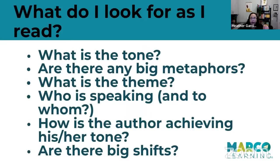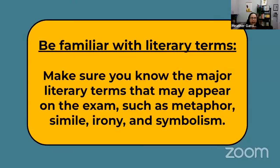Figure out who's speaking and to whom they're speaking — it feels basic, but if you're stuck in a passage, wrapping your head around this can re-center you, especially if you get into a panic mode. How is the author achieving his or her tone? Underline and circle that. And are there any big shifts — especially in poetry, especially in a sonnet? Anytime you see 'but,' 'except,' or 'however,' that shift is for sure going to end up being a question. I usually draw lines where the shifts are.